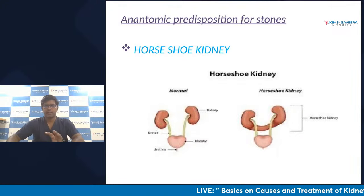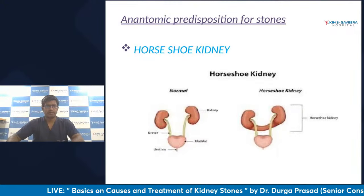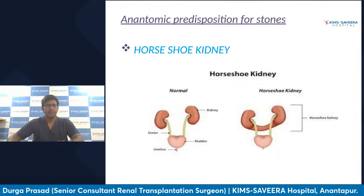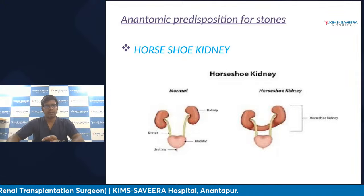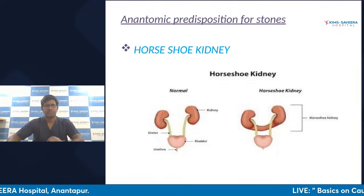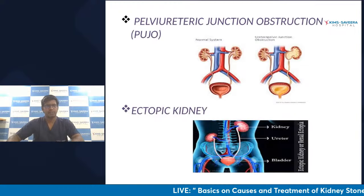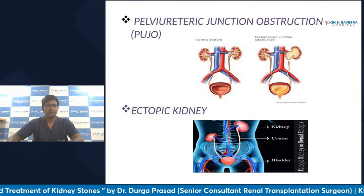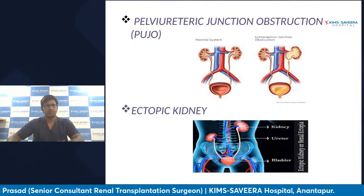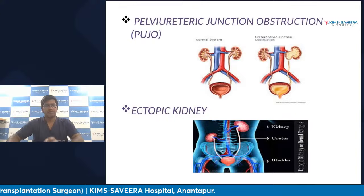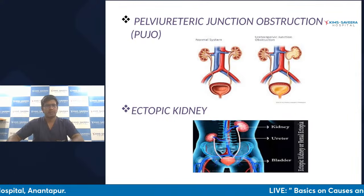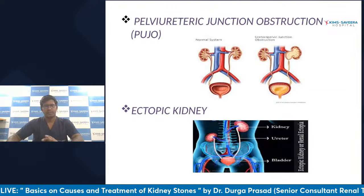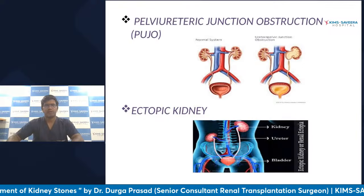There are also anatomical conditions that increase stone formation tendency. For example, horseshoe kidney is a condition where both kidneys are attached at their lower parts, creating a kink at the level of the ureters that causes urinary stasis inside the kidney, predisposing to stone precipitation. Pelvi-ureteric junction obstruction is another congenital condition, as is ectopic kidney. For all these conditions, a simple ultrasound — available everywhere nowadays — will give maximum information.